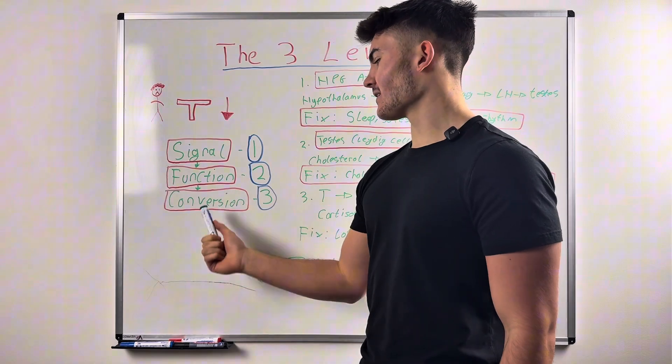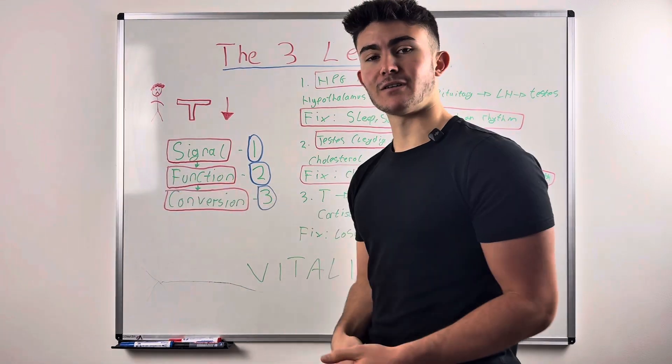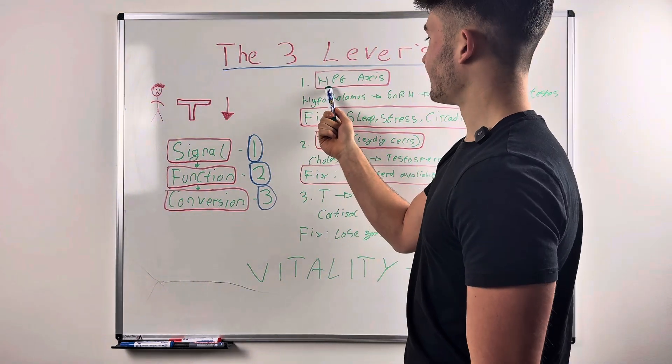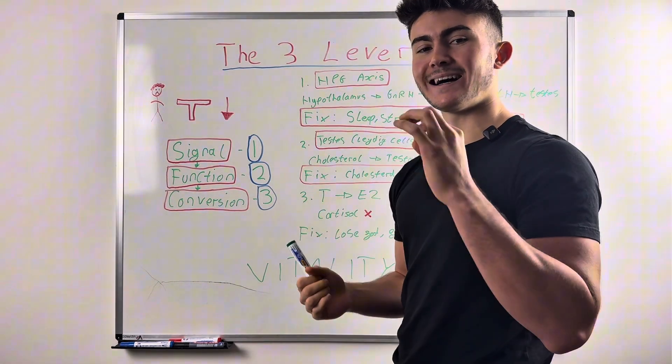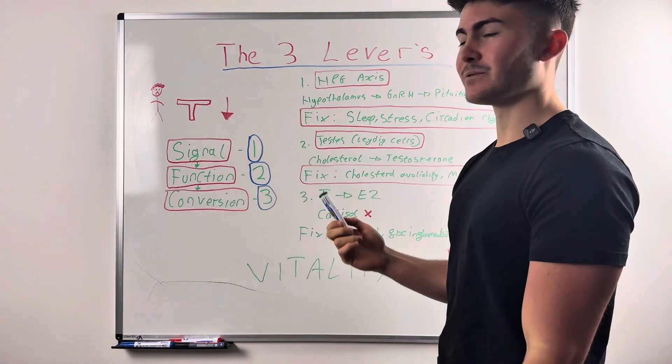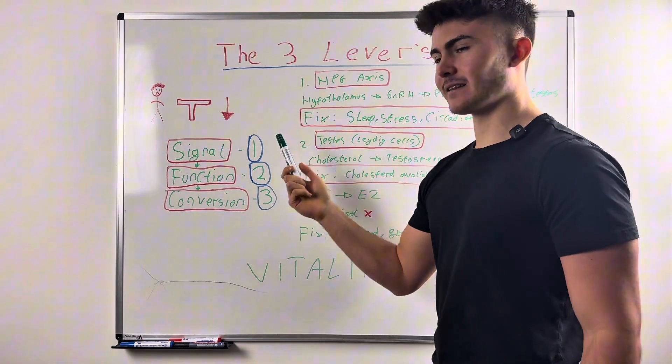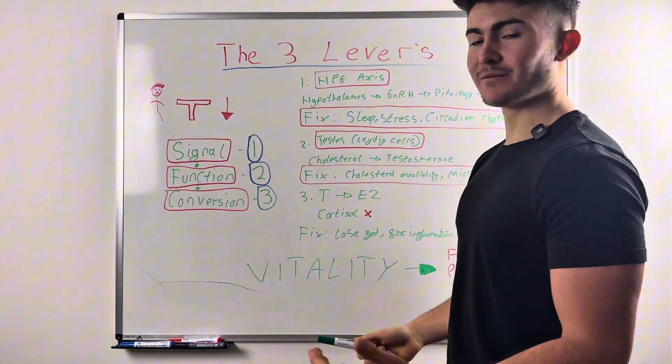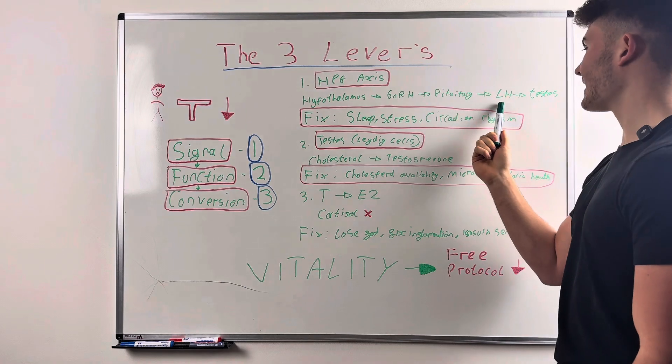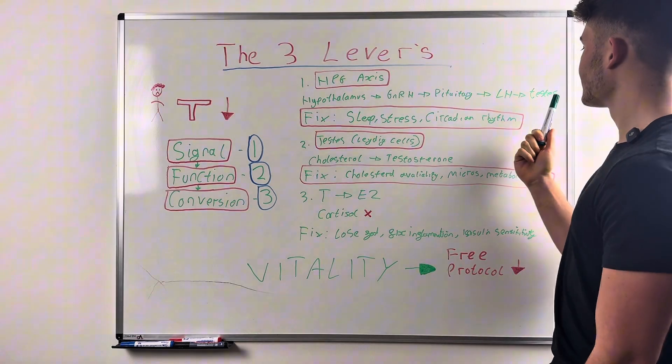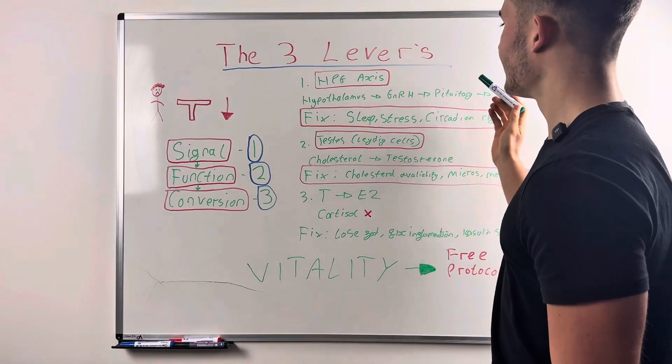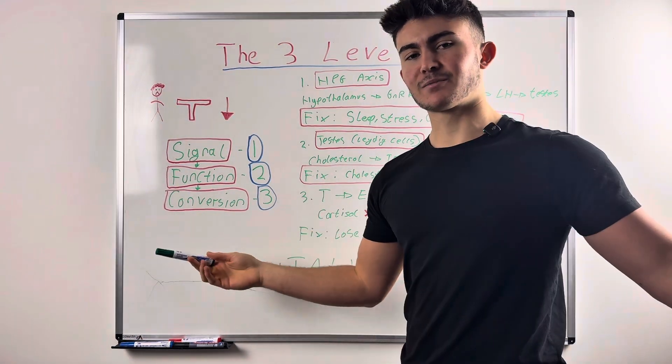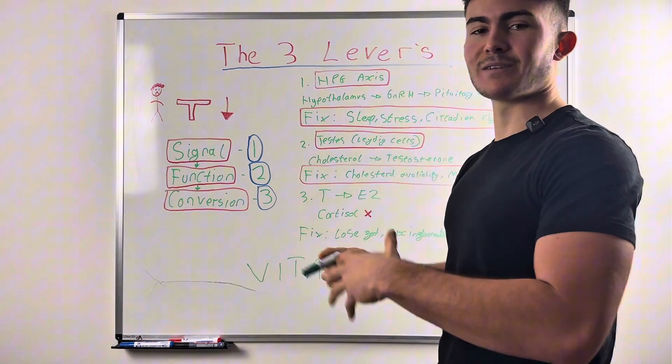You can't get the function right if the signal's off, you can't get the conversion right if the function's off. This is vital, so don't skip any of these steps. What we need to understand is the HPG axis, the hypothalamic pituitary gonadal axis. The hypothalamus, this is all in your brain, sends GNRH, which is gonadotropin-releasing hormone, to the pituitary, which then sends LH signals, which is luteinising hormone, to the testes, your balls, your Leydig cells. And this is the signaling process of your brain going, right, it's time to produce some testosterone. It's the starting point in the signal.